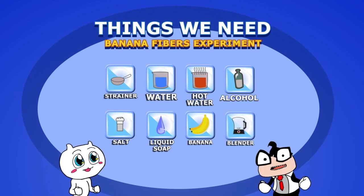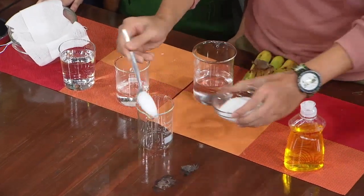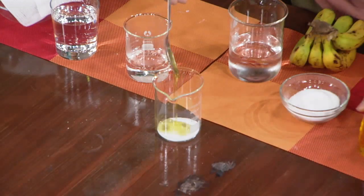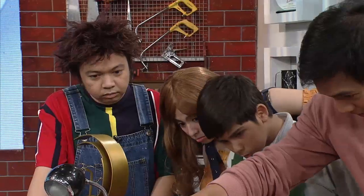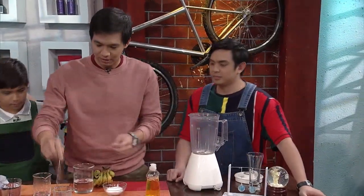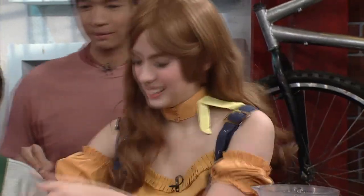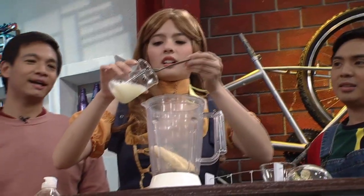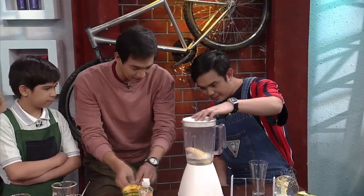Okay, so first step, gagawa tayo ng solution. One tablespoon ng asin, and then dalawang tablespoon ng liquid soap, and then hot water — top na, 100 ml. Tapos, imimix natin ito. Okay, Isabel naman ang magmimix ng ating special solution. Okay. Nakaalak na, pwede na.